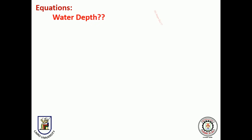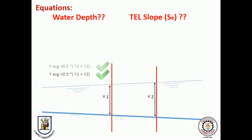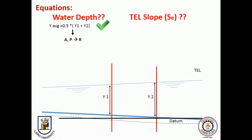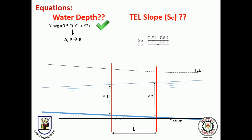We are dealing with non-uniform flow which has a varying water depth. We just need one depth to substitute into the equations, as well as the magnitude of the total energy line slope. So, we will take two interior sections and get Y1 and Y2, then take the average of both in the equations. We will use the average depth in area and wetted perimeter calculations. SE equals the difference between the energy at section 1 and section 2 divided by the length between those two sections.